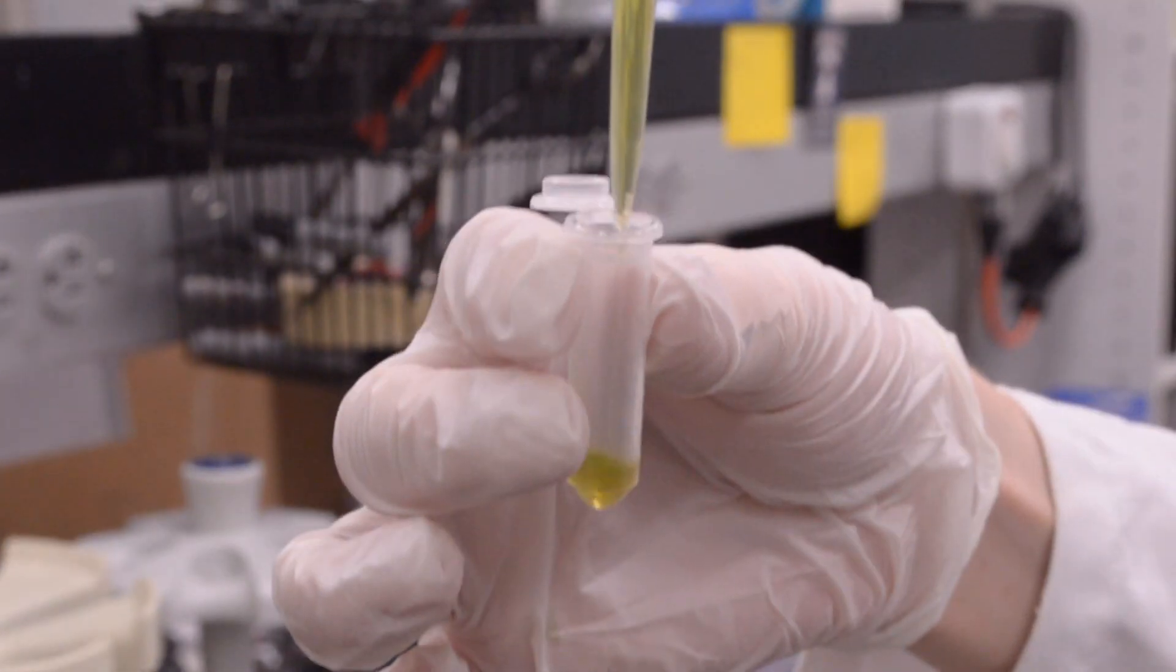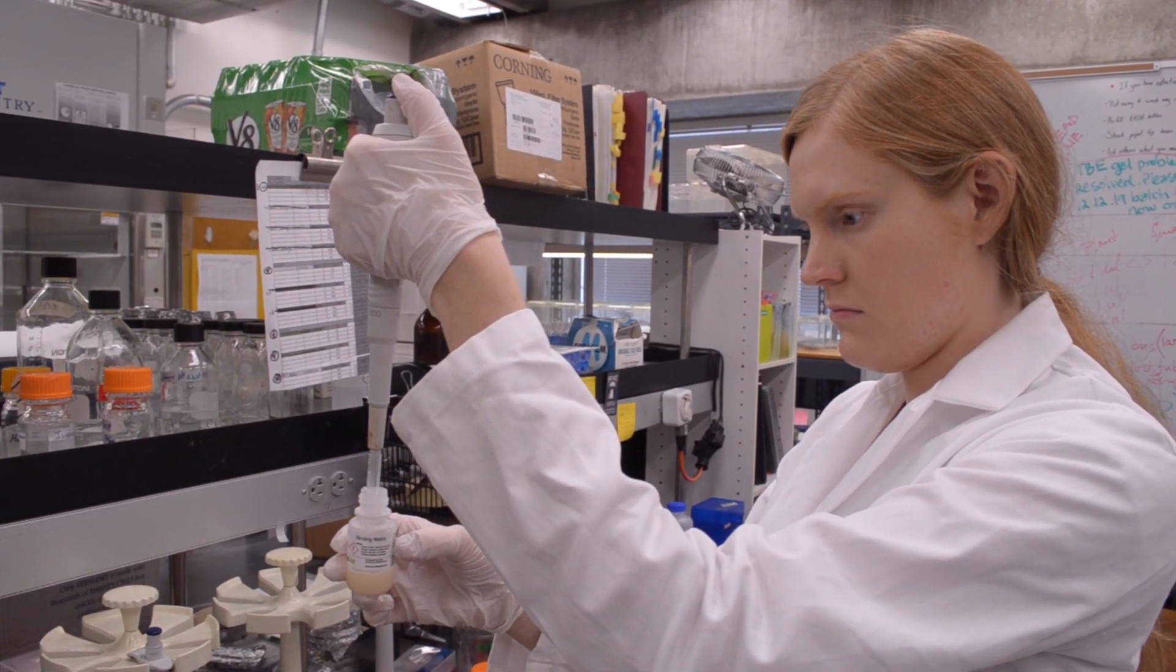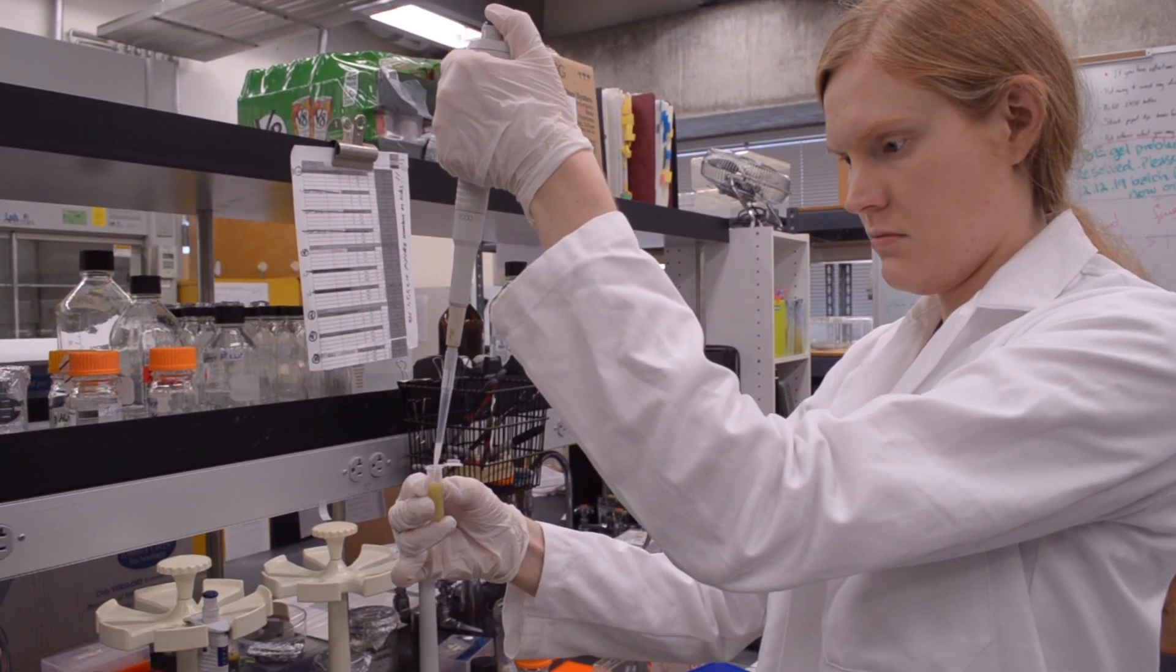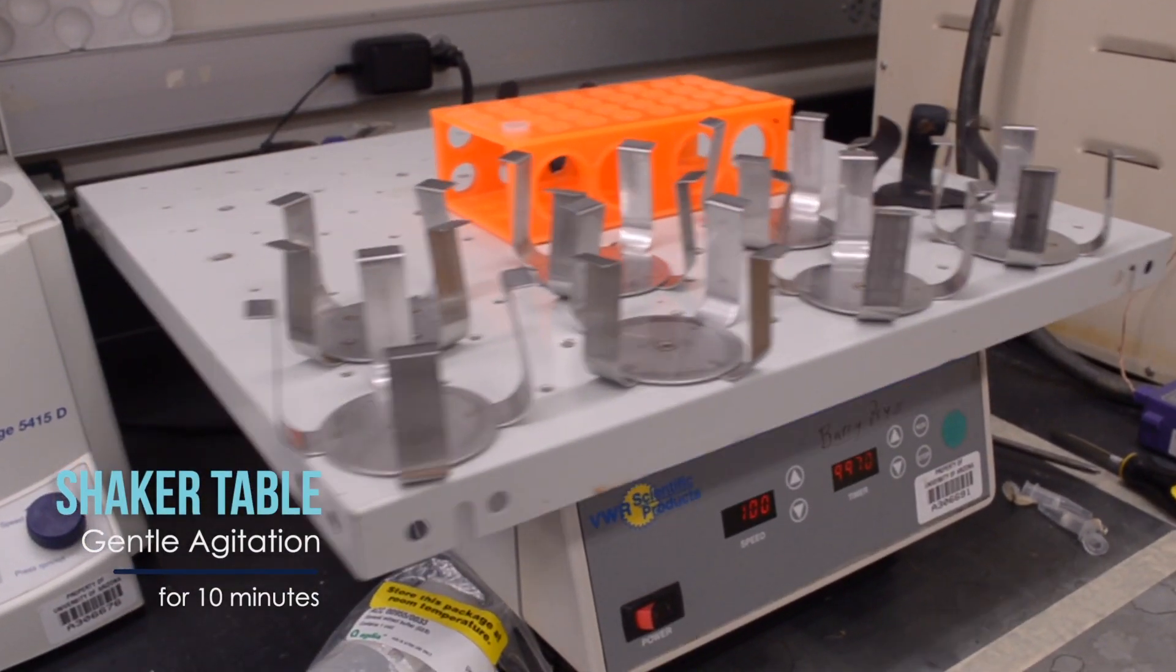Transfer the liquid to a new tube and add equal parts binding matrix. Make sure the binding matrix is well mixed before you add it. Place the tube on a shaker table for 10 minutes at gentle agitation.